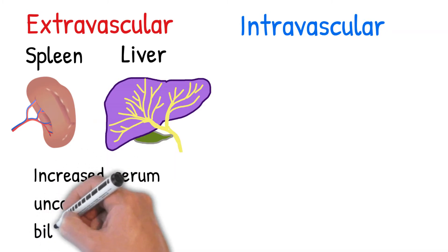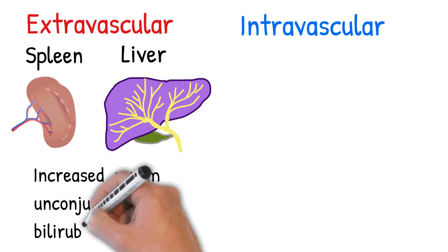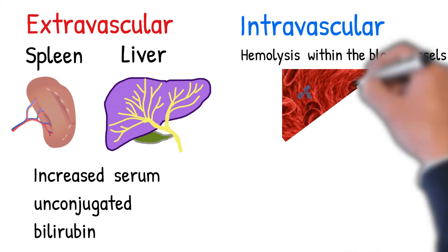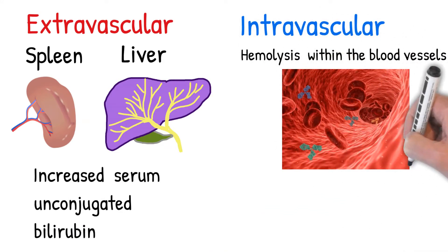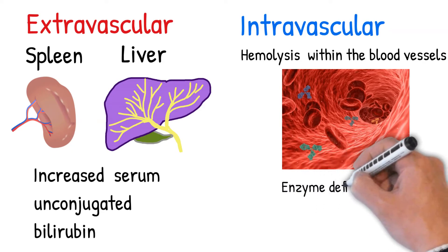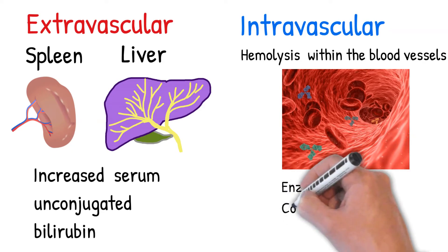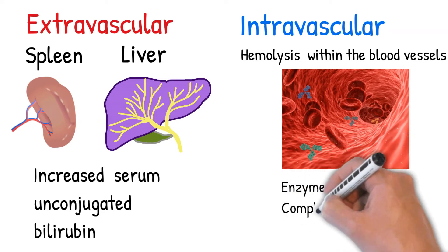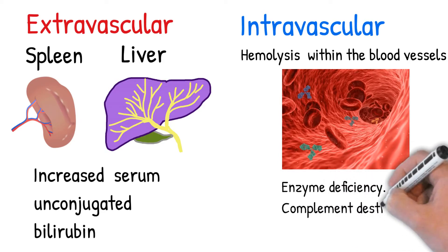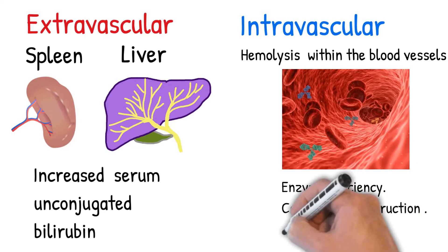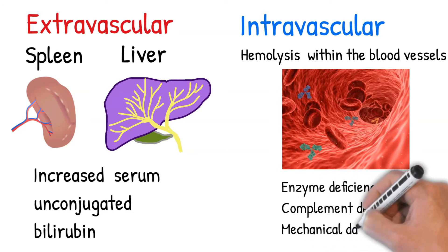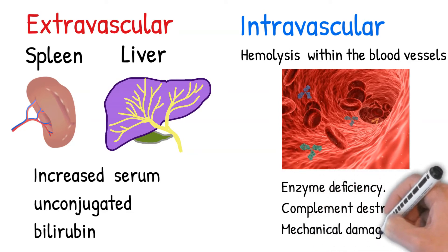Intravascular hemolytic anemia refers to RBC hemolysis that occurs within the blood vessels. Causes include enzyme deficiency, e.g., pyruvate kinase deficiency; complement destruction, e.g., immune-mediated hemolysis; IgG-mediated in some cases; and mechanical damage, e.g., calcific aortic stenosis.